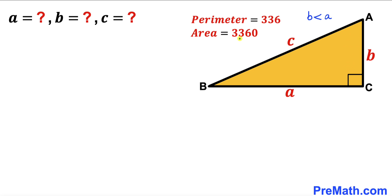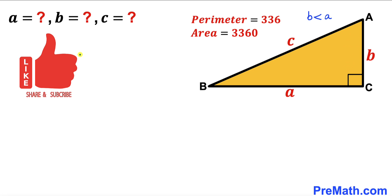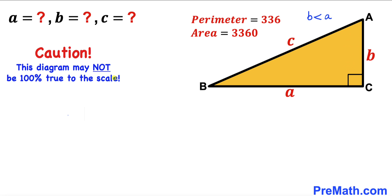The perimeter of this right triangle is 336 units, whereas its area is 3360 square units. Our task is to find the values of side lengths a, b, and c. Please note that this figure may not be 100% true to scale.